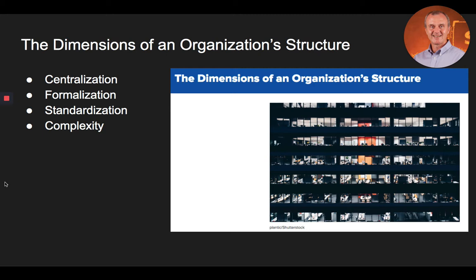Let's begin this part of the lecture by talking about the dimensions of an organization structure. Once managers complete the design of an organizational structure, an understanding of the attributes of the structure is required to evaluate its fit and overall effectiveness. The four major dimensions that organizations use to evaluate the effectiveness of their structure include centralization, formalization, standardization, and complexity.